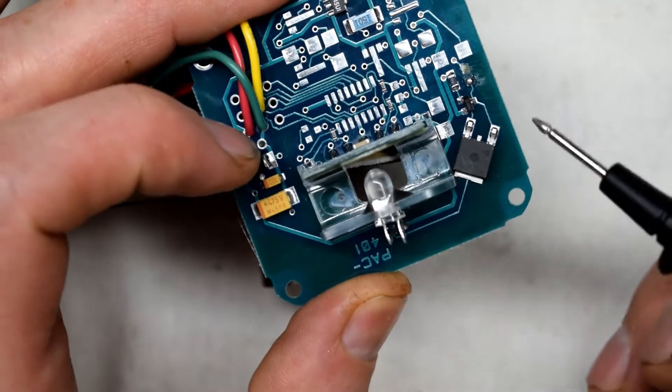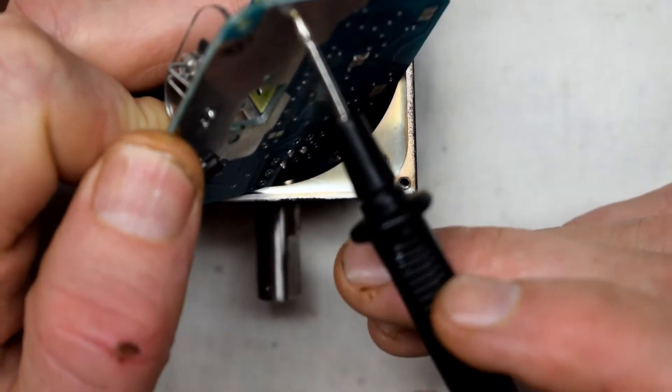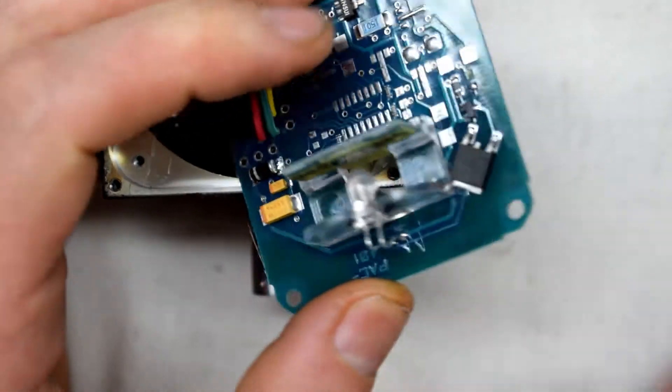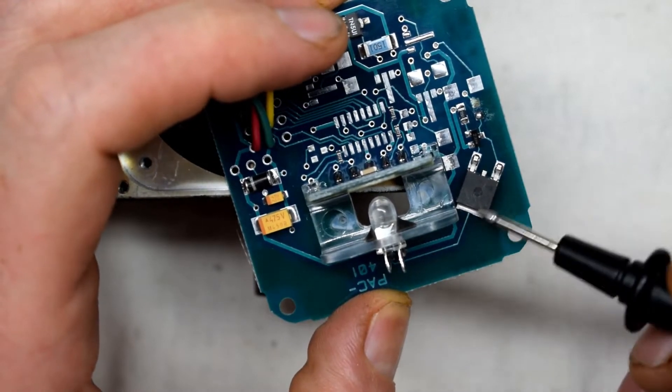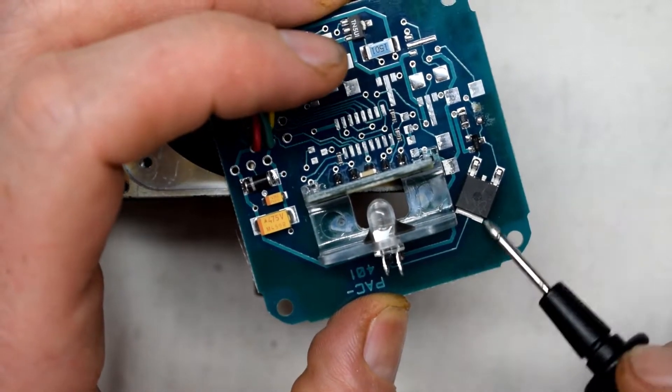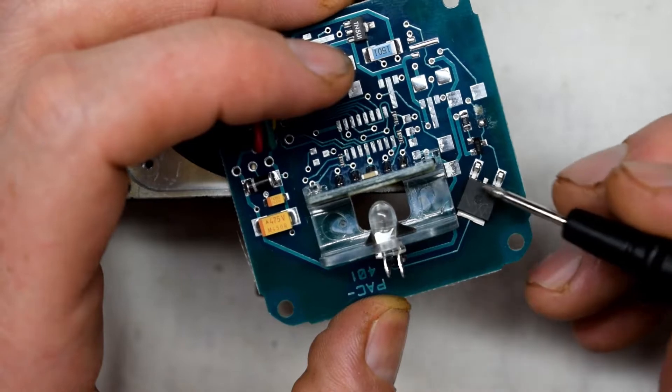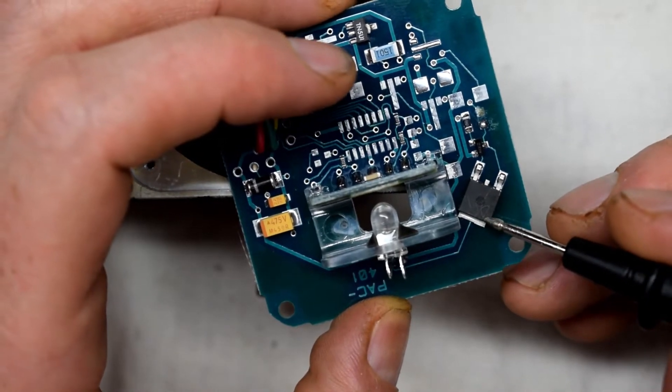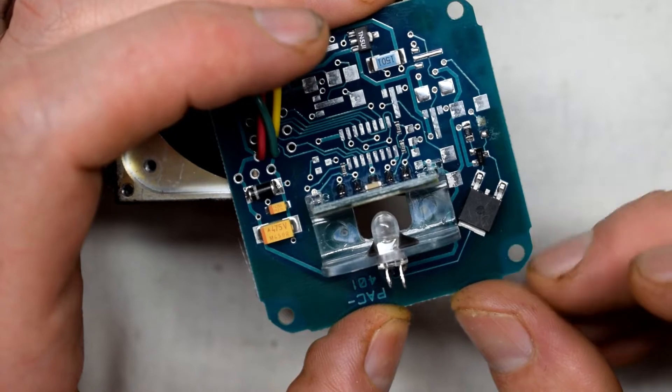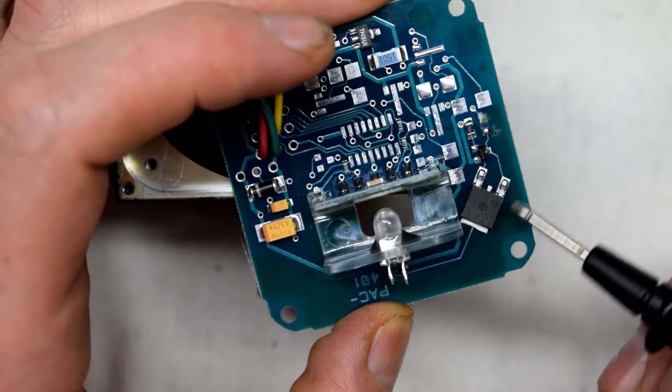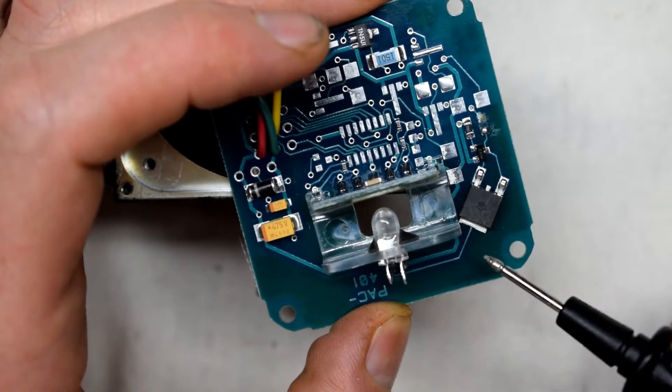To replace this one you need to have a heat gun. There's a pad on the bottom so you can just shoot your heat gun at the bottom. Heat up the pad and then you can remove this guy. And then you may want to put a little bit of liquid solder for your new N-channel MOSFET. And that's about it for the two parts.